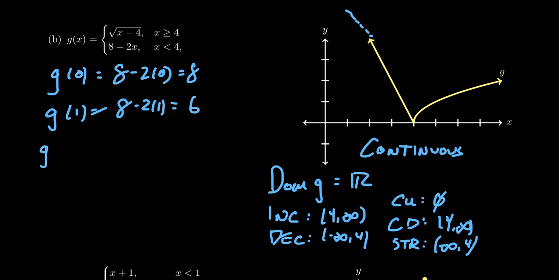If you want to do g of, say, 8, g of 8 is greater than or equal to 4, so we're going to use the other compartment. We're going to get the square root of 8 minus 4, which is the square root of 4, which is 2. So the evaluation depends on which interval are you in when you're looking at this thing.